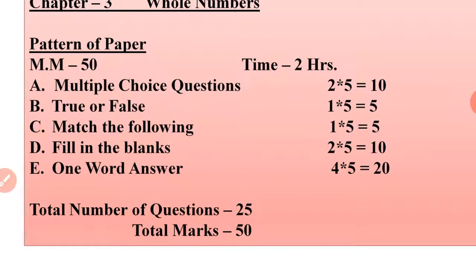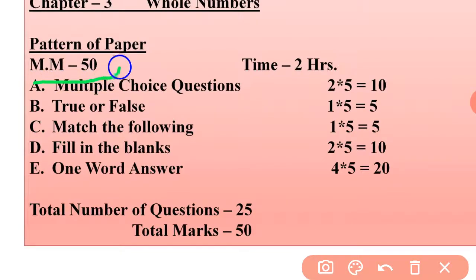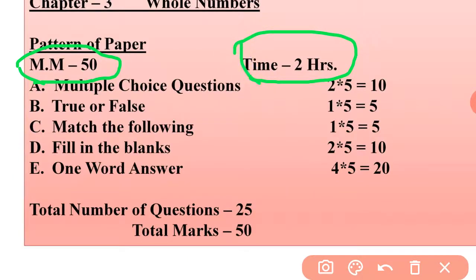The paper will be divided into five parts. The total marks will be 50 and time provided will be 2 hours. Part A is Multiple Choice Questions — there are five questions and each question carries two marks, so total 10 marks for MCQ.